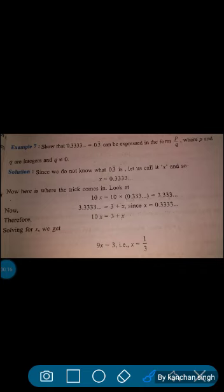We have to show 0.3333, or 0.3 bar, can be expressed in the form of p by q, where p and q are integers. As we know it is a rational number, so q should not equal 0.